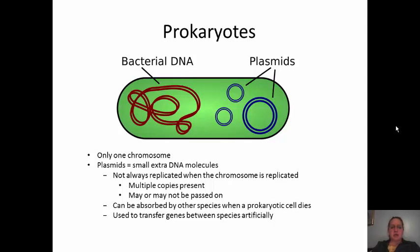Plasmids are just small extra DNA molecules. They are not always replicated when the chromosome is replicated, such as in binary fission — therefore multiple copies may be present so that each bacterial cell gets some plasmids, but they may or may not be passed on. Plasmids can also be absorbed by other species when a prokaryotic cell dies, so that genetic information can be transferred to another species.